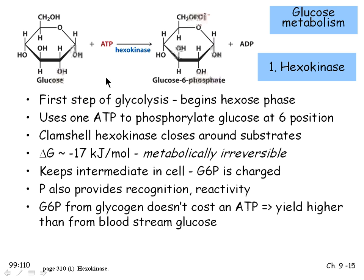Looking at hexokinase in detail: it adds phosphates to hexoses, generally glucose, consuming one ATP to make glucose-6-phosphate. It has a large negative delta G of minus 17 kJ/mol, making this metabolically irreversible — a one-way step. The phosphorylation keeps glucose trapped in the cell since the charge prevents it from going back out through the glucose carrier. Note that glucose obtained from glycogen arrives pre-phosphorylated via phosphorolysis, yielding a slightly higher energy yield per glucose.